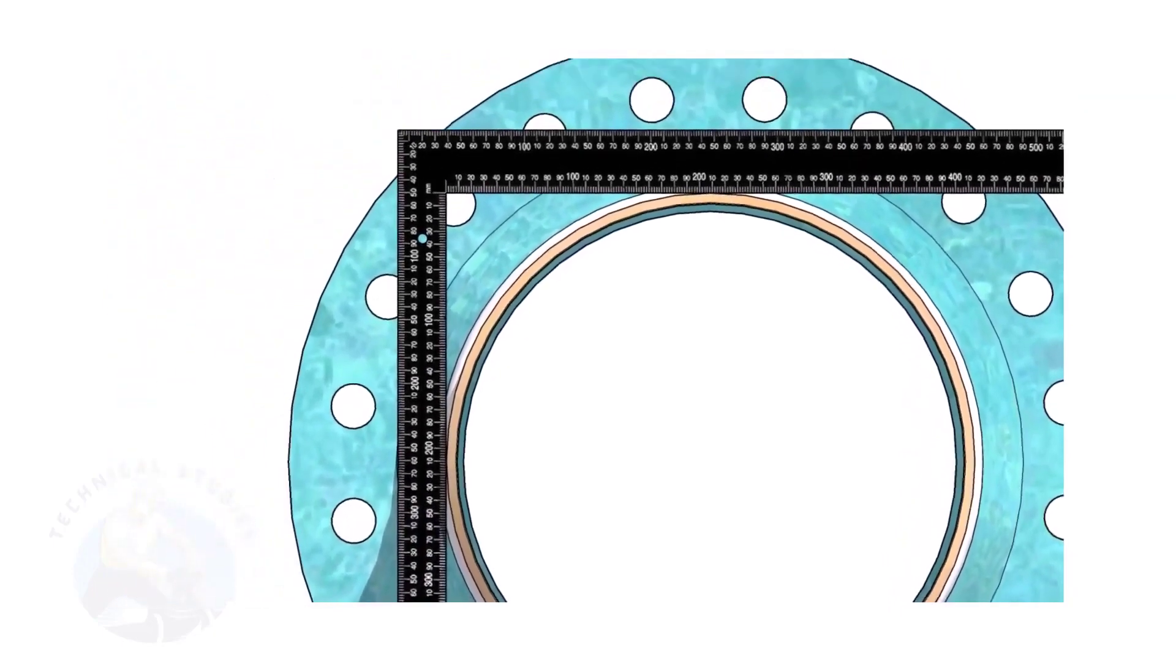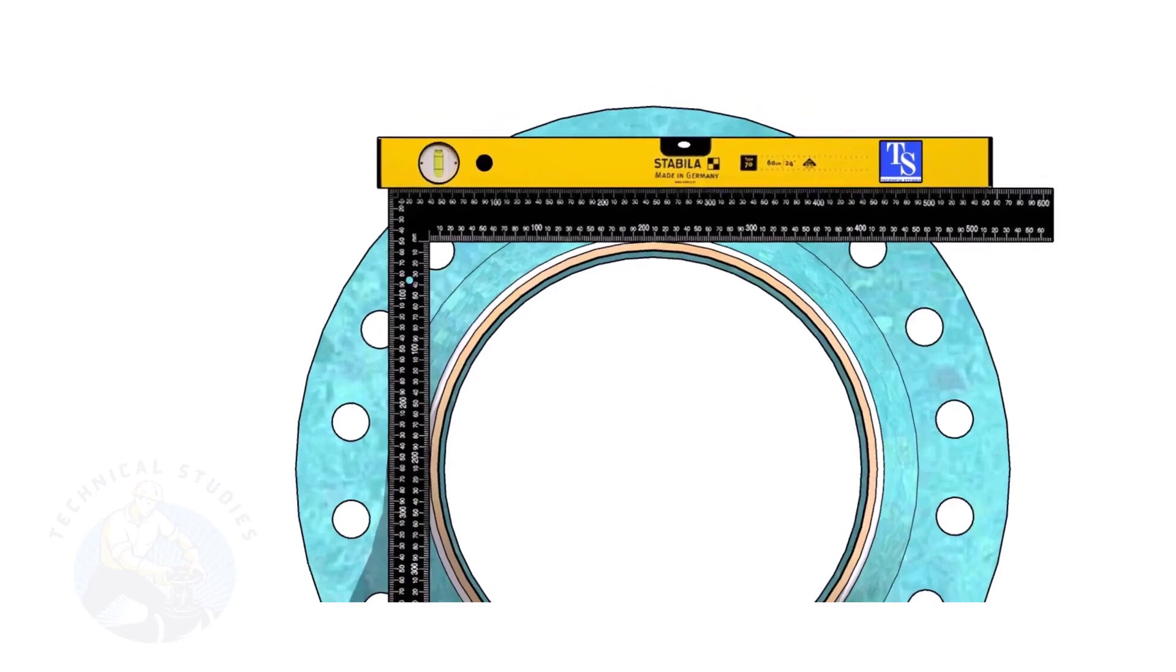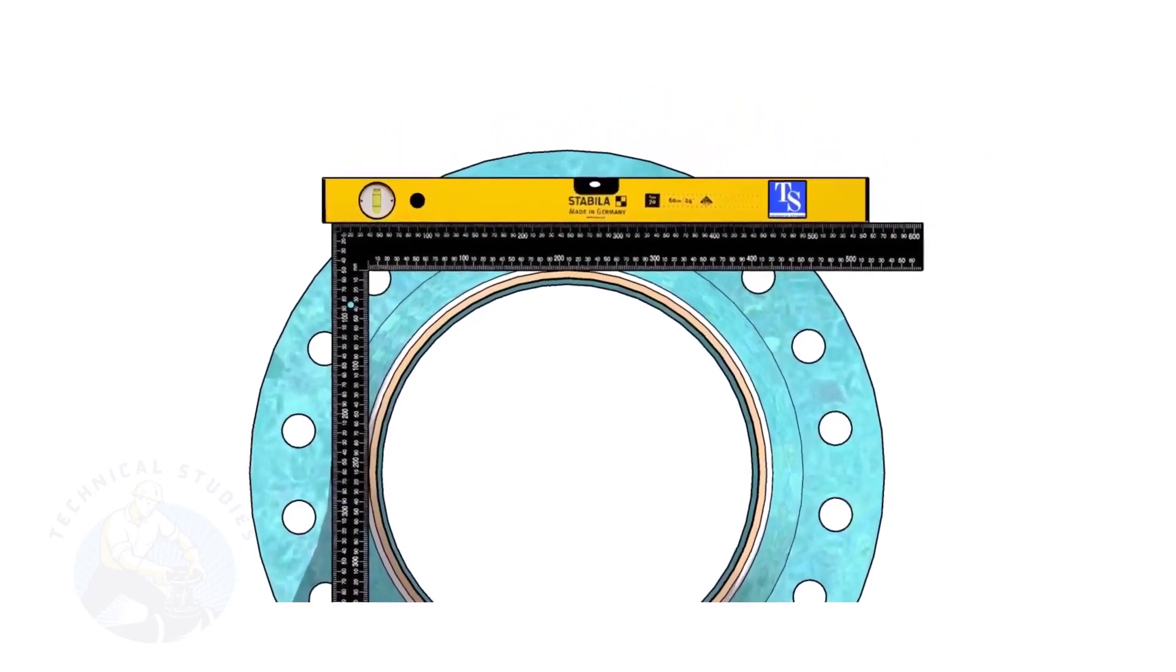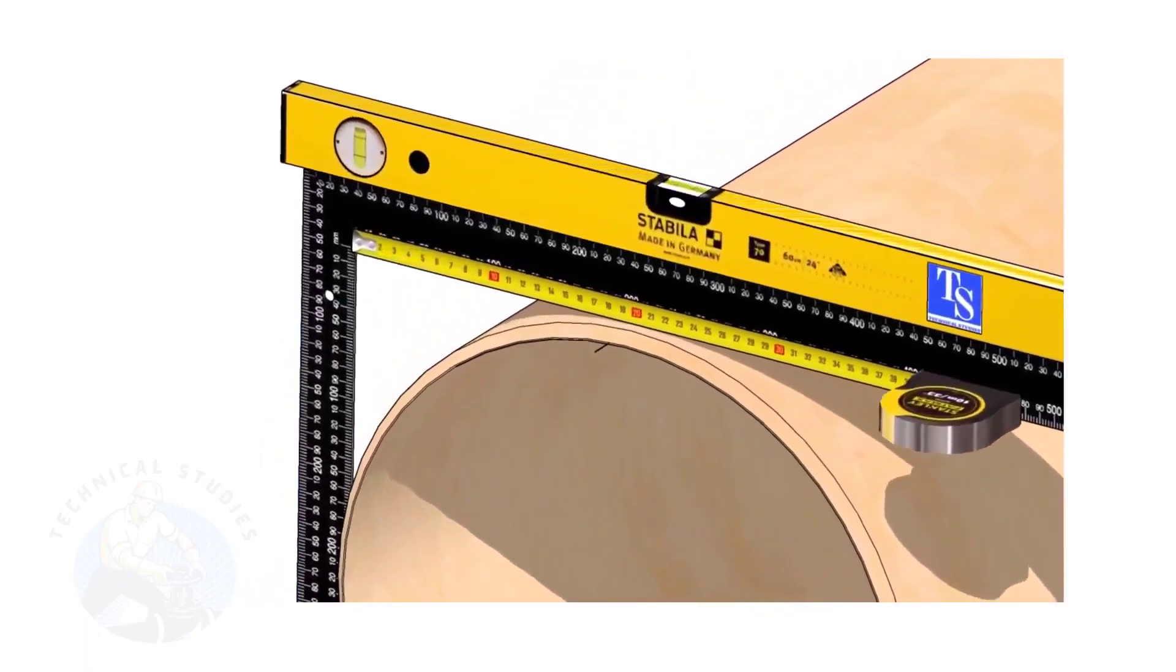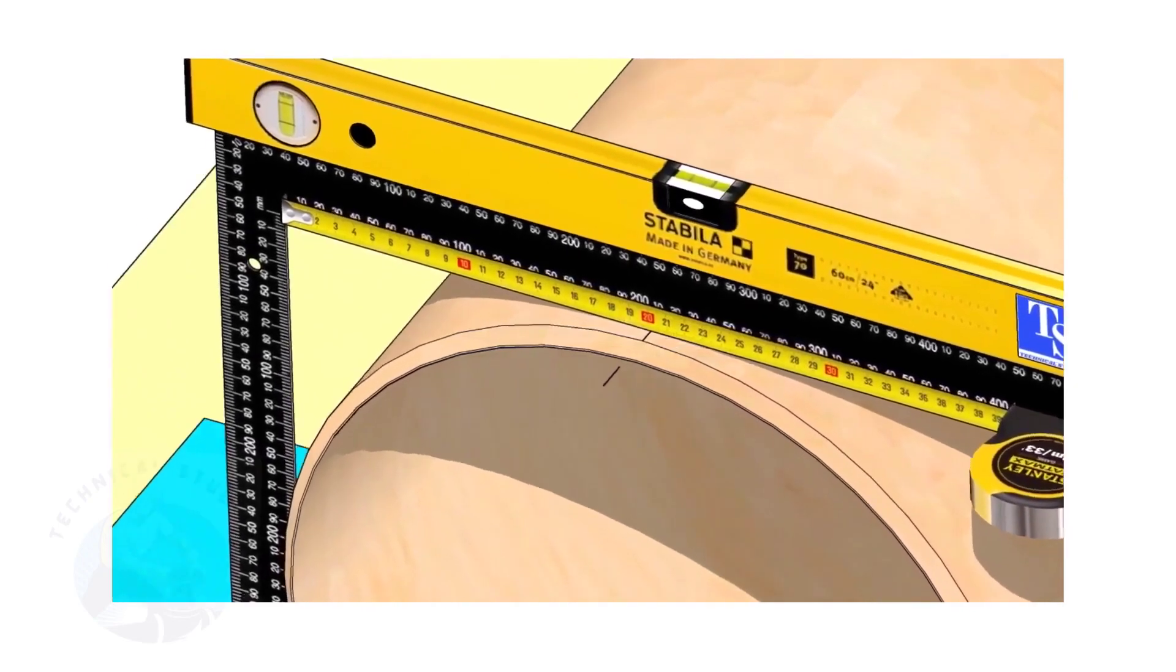Hold a large right angle on the pipe as shown. Put a spirit level on the right angle and correct the top level. Mark half OD of the pipe on the top side. Here, the half OD is 203 millimeters.